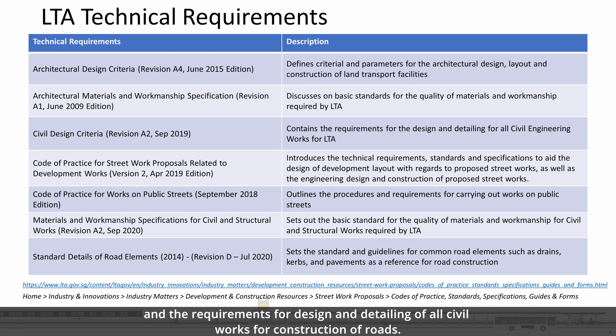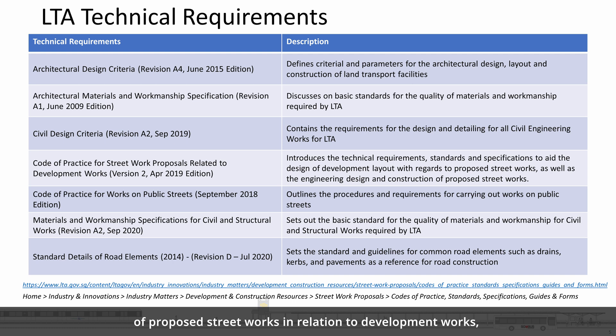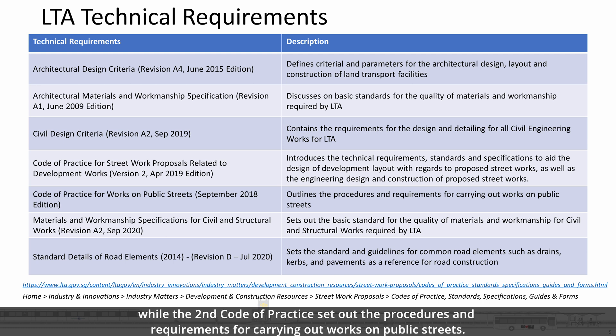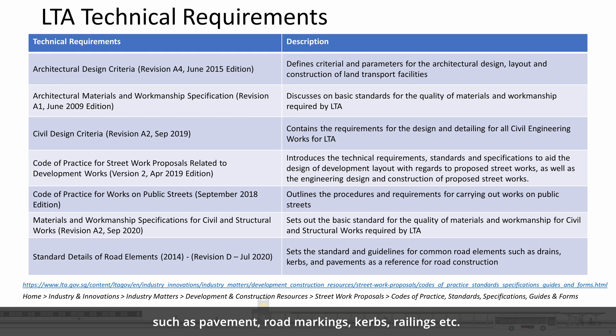The requirements also discuss the quality of materials and workmanship required by LTA and the requirements for design and detailing of all civil works for construction of roads. The first Code of Practice introduces the technical requirements, engineering design and construction of proposed street works in relation to development works, while the second Code of Practice sets out the procedures and requirements for carrying out works on public streets.